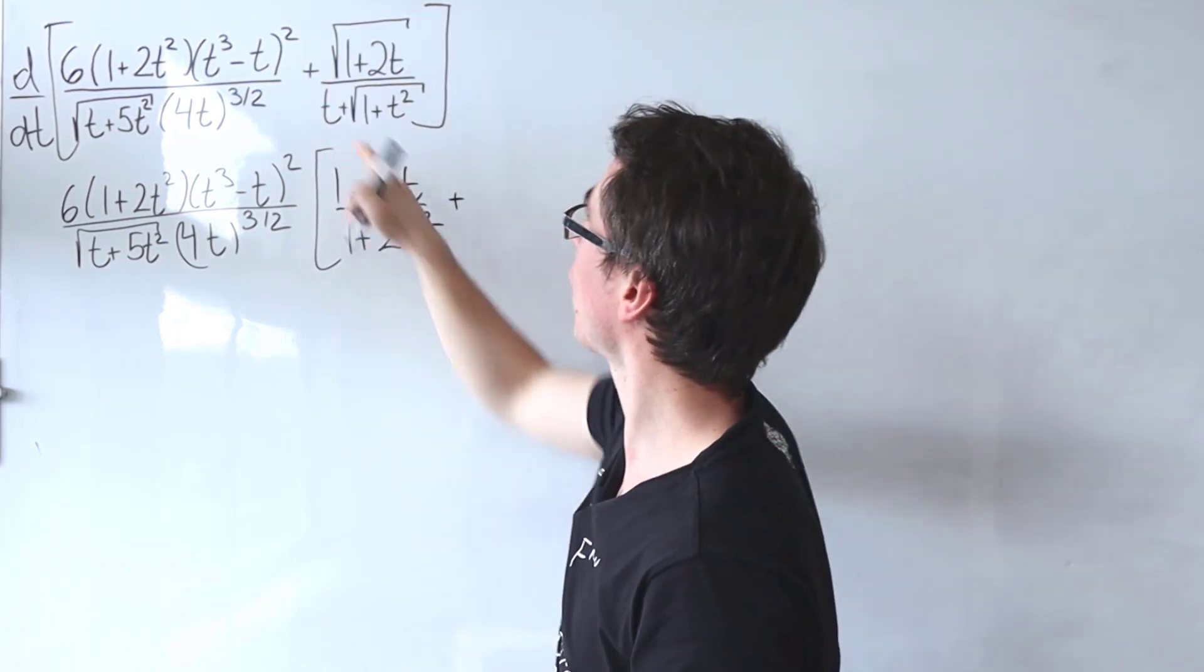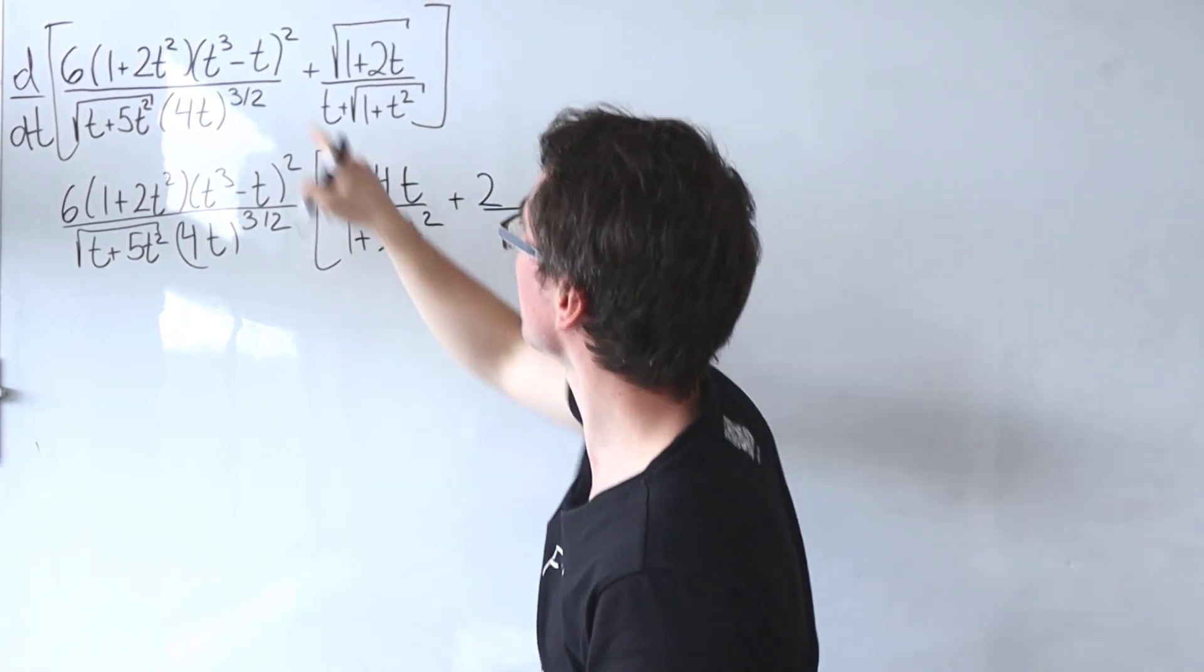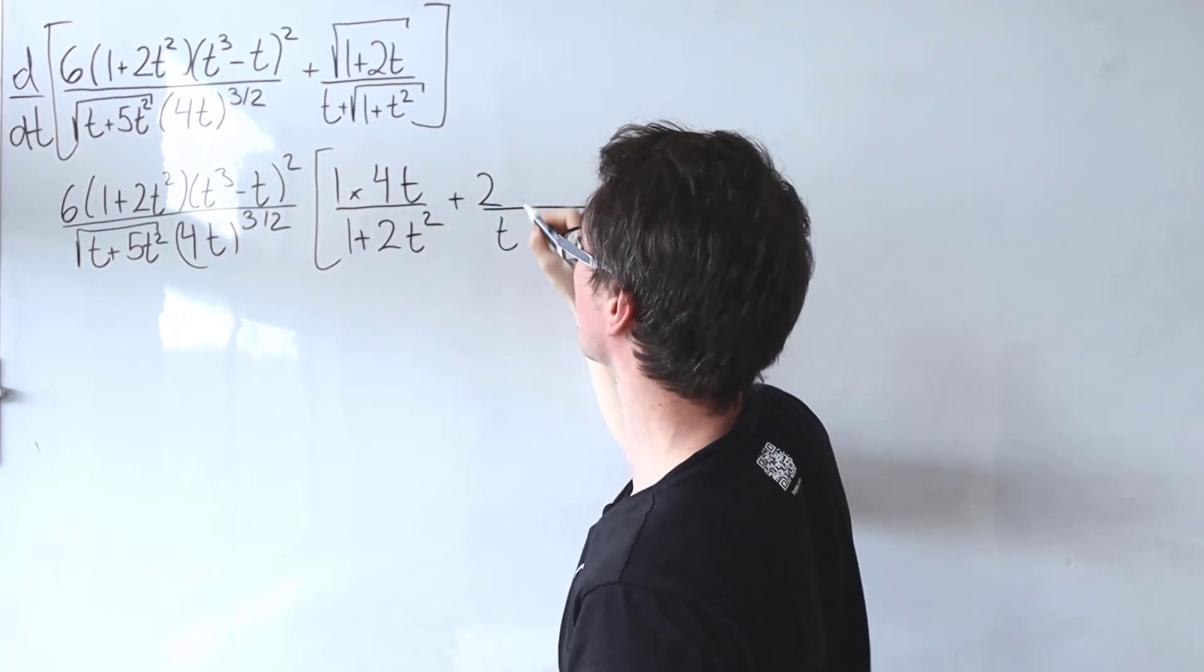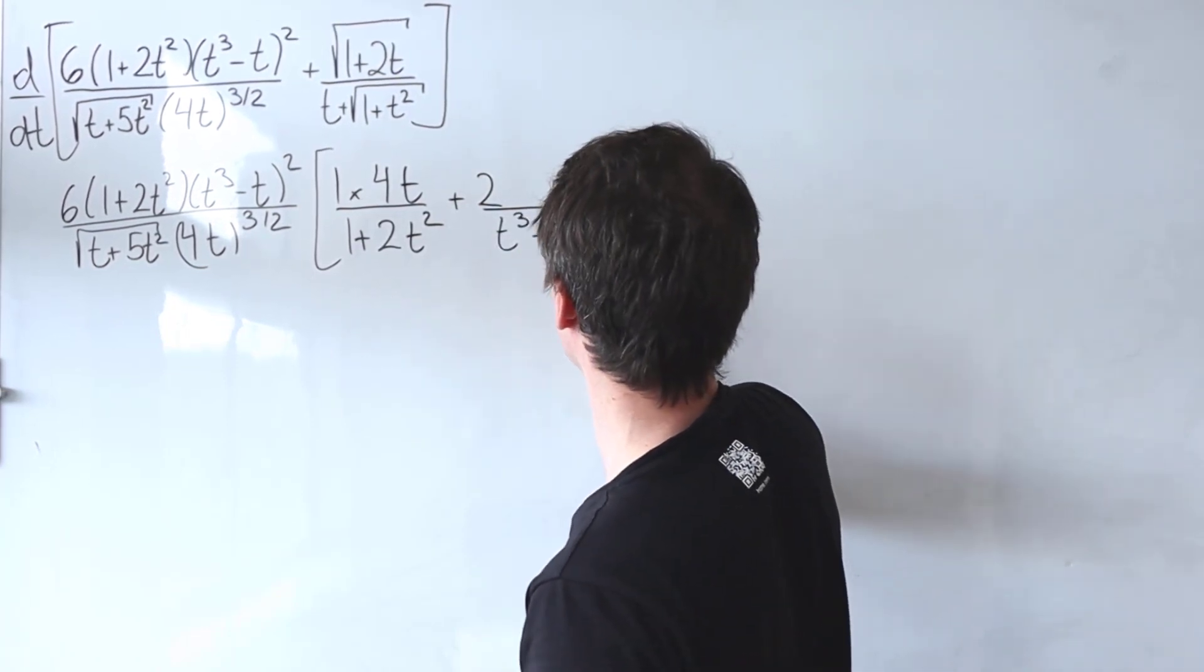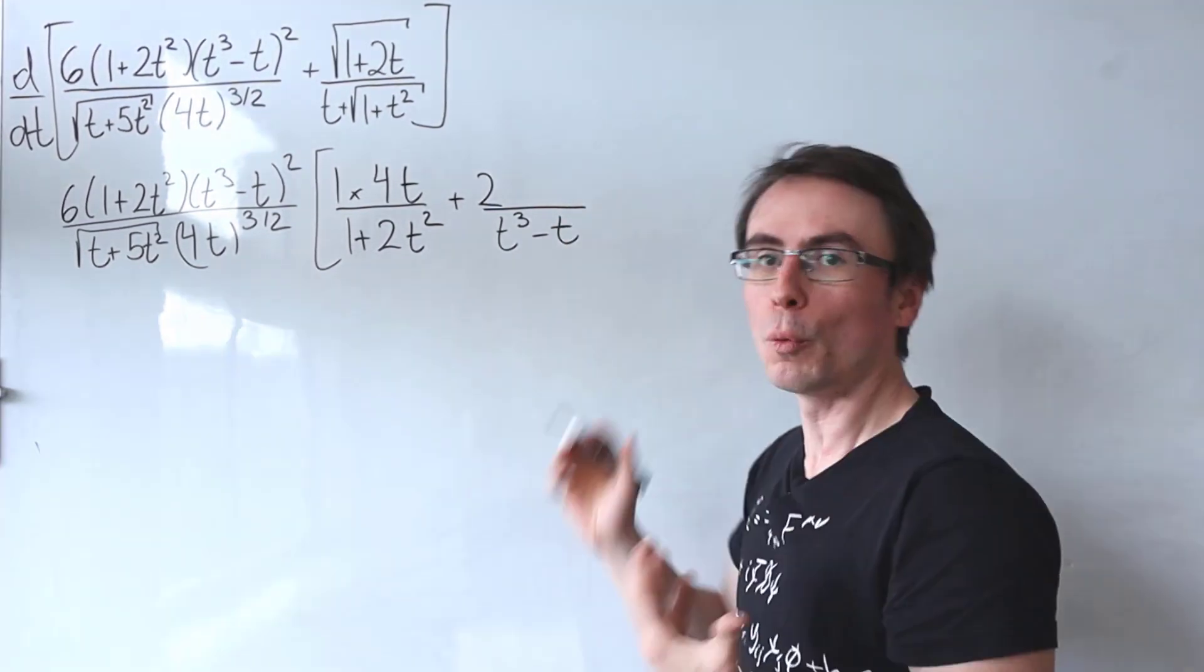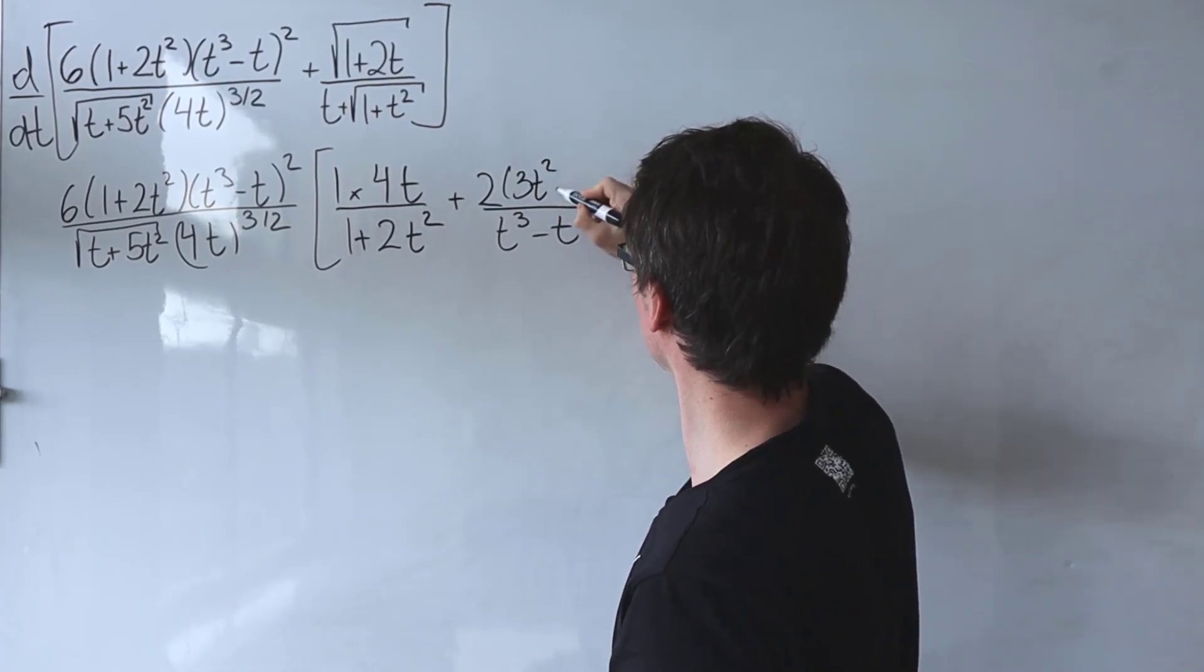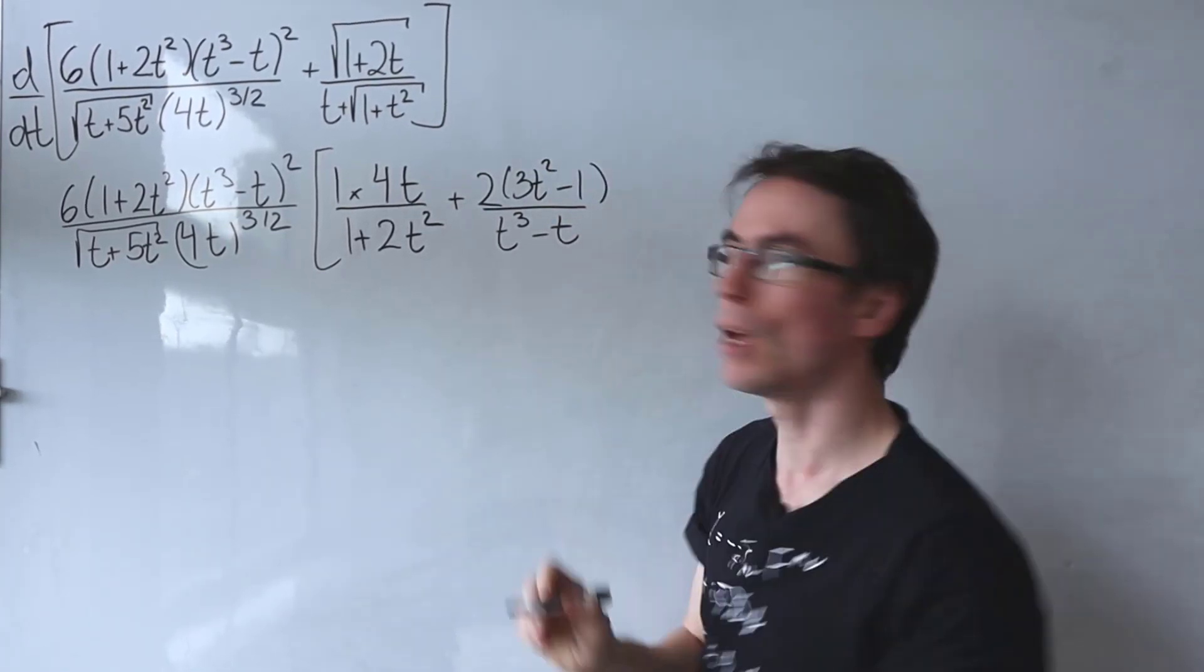So for the next one, the power is 2. I'm going to divide by the original expression, which is t cubed, take away t. And then I'm going to multiply by its derivative, which is just going to be equal to 3t squared, take away 1.